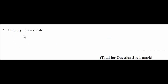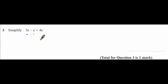Question three: simplify 3e minus e plus 4e. We're collecting like terms. Don't forget, if there's an e on its own it is just one e. Starting at the beginning we have three e's; we take an e away, leaving two e's, and then add another four e's. 2 plus 4 is 6e.